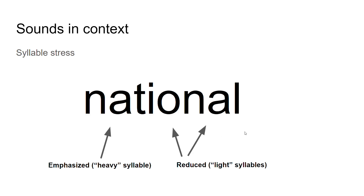The same thing can happen within words. Students with a background in a romance language like French or Spanish might have words superficially similar to English but with a different stress pattern. So instead of 'NAtional,' they might say 'naTIONal.' Only address this if it's inhibiting understanding, and when you do, simply say 'say it like me — NAtional, NAtional' rather than getting into detail about intonation.